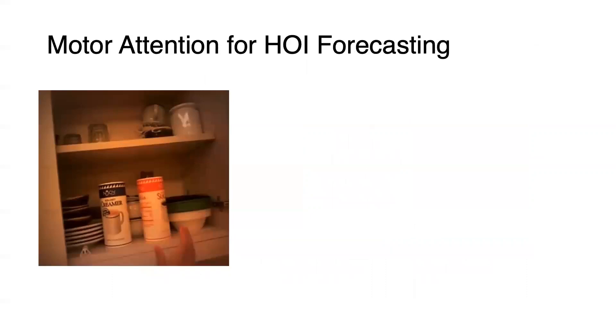Besides action labels, we can also imagine the intentional body movement, which is also known as motor attention. In first-person context, motor attention can be represented as future hand trajectory. In fact, motor attention reveals key information about future human-object interaction.